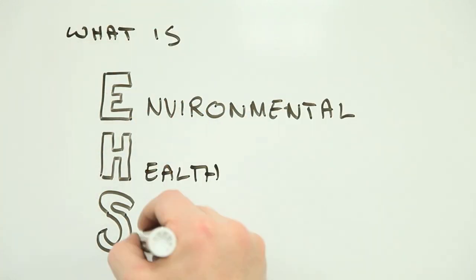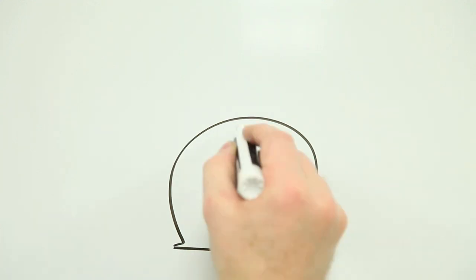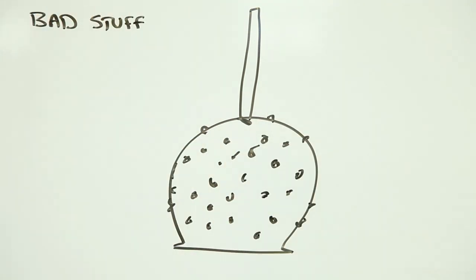What is environmental health science and why is it important? Imagine you have a caramel apple. Let's make it a peanut-coated caramel apple. Now, imagine all the ways that apple might cause harm to someone.